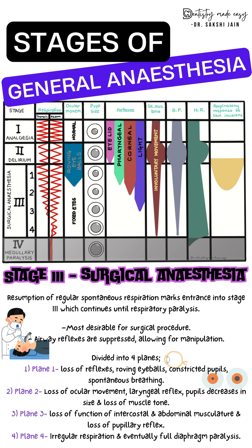Stage 3 is divided into four planes. Plane 1 features spontaneous breathing, constricted pupils, loss of eyelid and pharyngeal reflexes, and moving eyeballs. Plane 2 has intermittent cessation of respiration along with loss of ocular movements and laryngeal reflexes, decrease in pupil size, and loss of muscle tone.